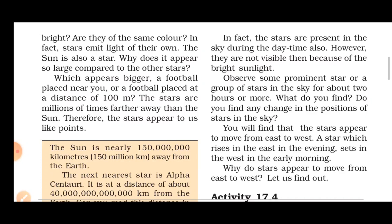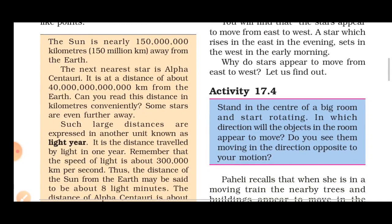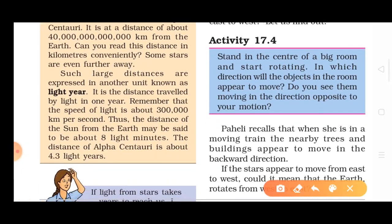The stars are millions of times further away than the sun. The sun is 150 million kilometers away from the Earth. The next nearest star is Alpha Centauri. Since distances to stars are so large, we need to learn the distance in a smaller unit, so we use the light year.